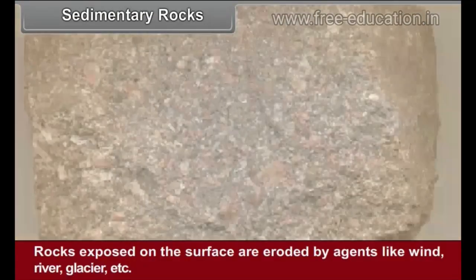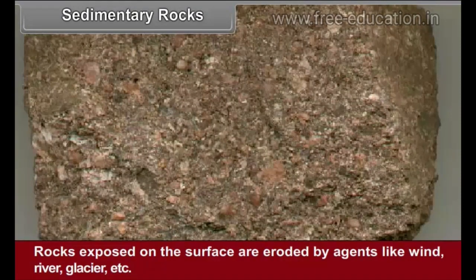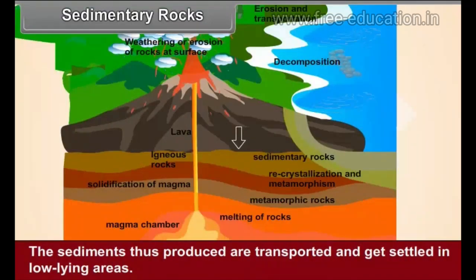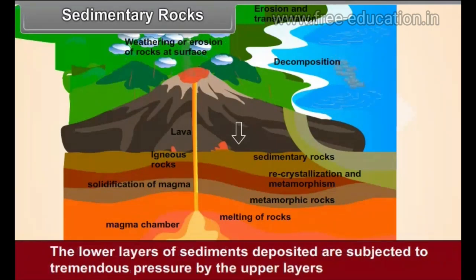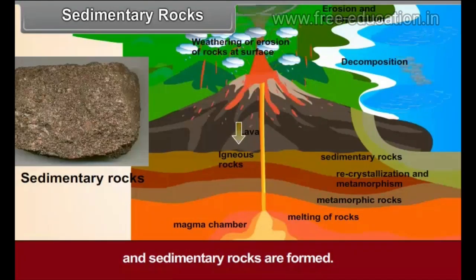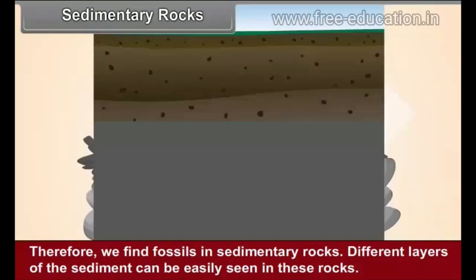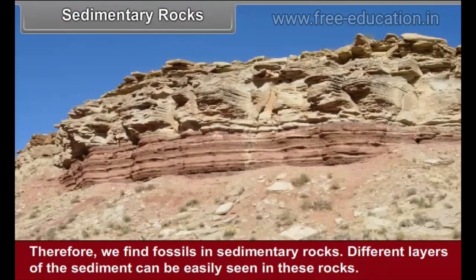Sedimentary Rocks: Rocks exposed on the surface are eroded by agents like wind, river, glacier, etc. The sediments thus produced are transported and get settled in low-lying areas. The lower layers of sediments deposited are subjected to tremendous pressure by the upper layers and sedimentary rocks are formed. While the layers of sediments are getting deposited, the remains of dead animals or plants also get buried in these layers. Therefore, we find fossils in sedimentary rocks. Different layers of sediment can be easily seen in these rocks.